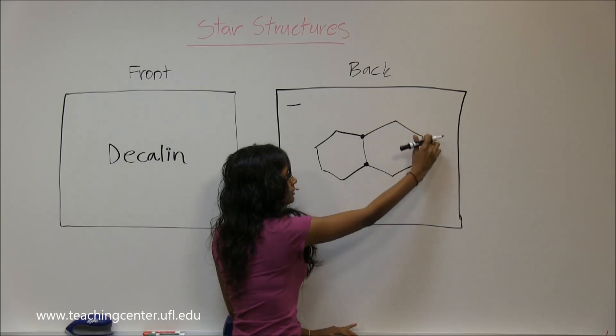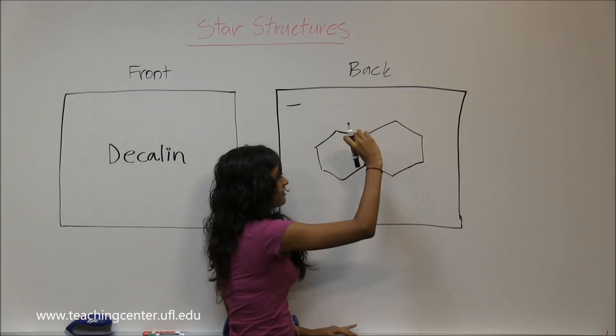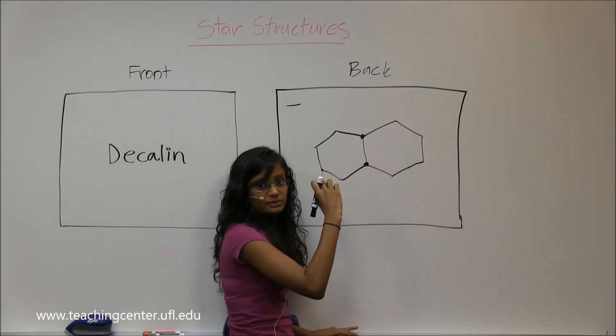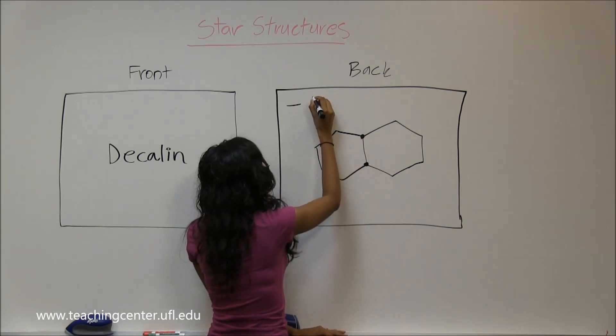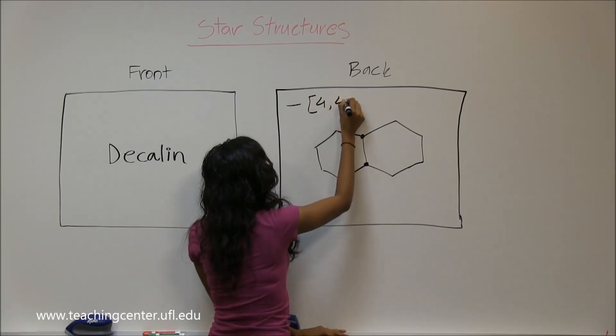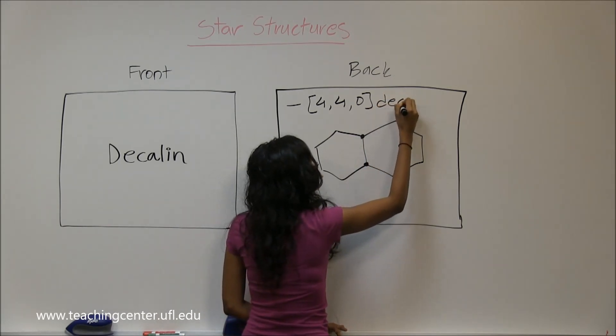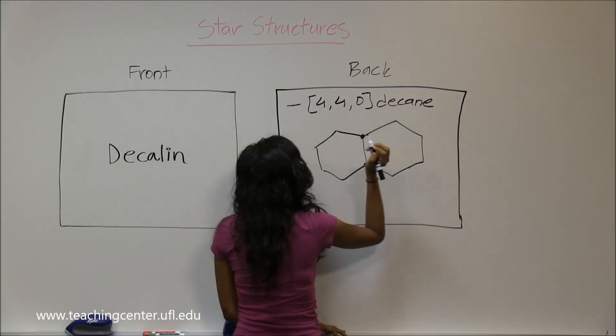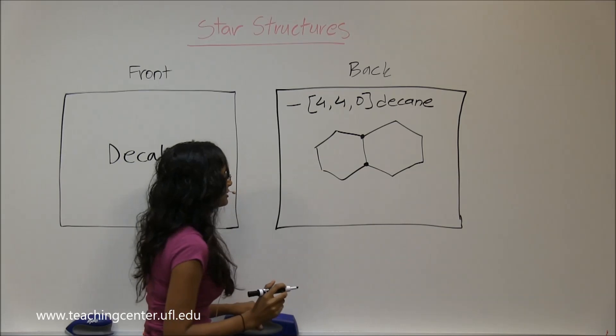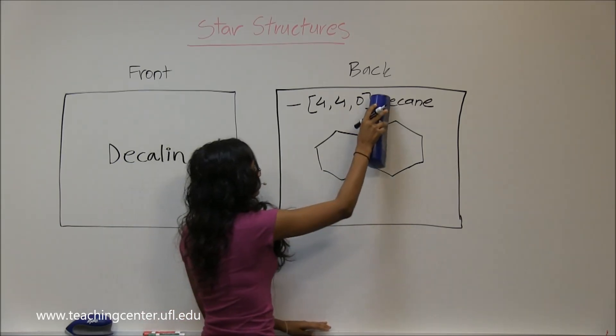Besides the bridge head carbon, you have four carbons on both sides and there is nothing to connect the two bridges, so it's going to be [4.4.0]bicyclodecane. That's how you would name it.